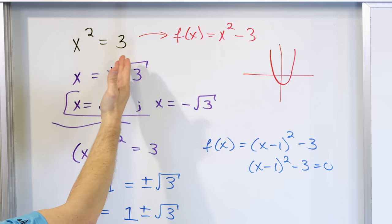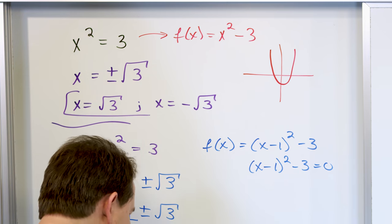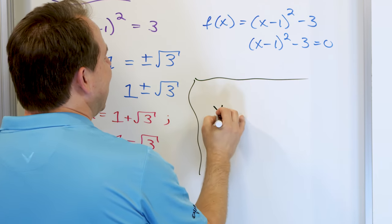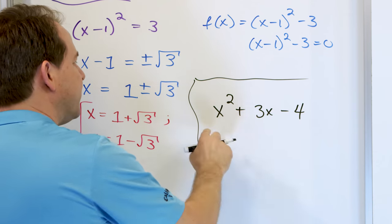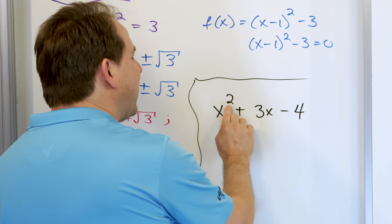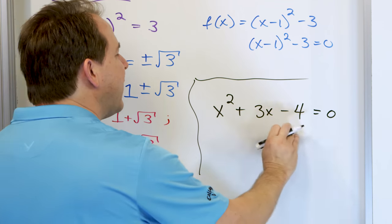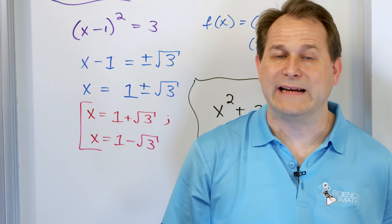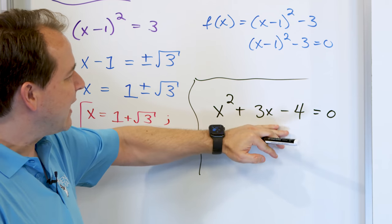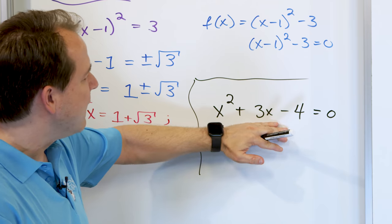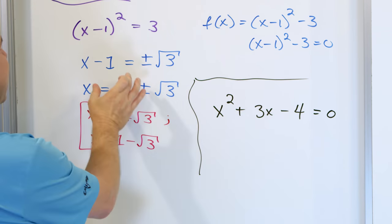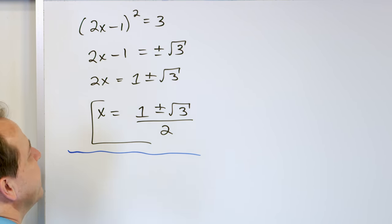Now you can see why it's called a perfect square quadratic. The term involving the variable is just a term squared — the entire parentheses is quantity squared. A general quadratic like x² + 3x − 4 is not a perfect square quadratic because the variable appears in two places — once squared and once not. But in a perfect square quadratic, the only place where the variable exists is a quantity that is squared on one side of the equal sign, making it easy to solve by taking the square root of both sides.